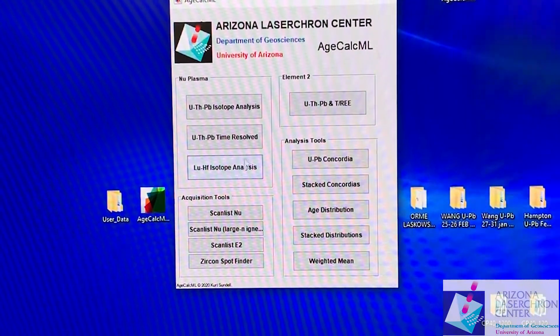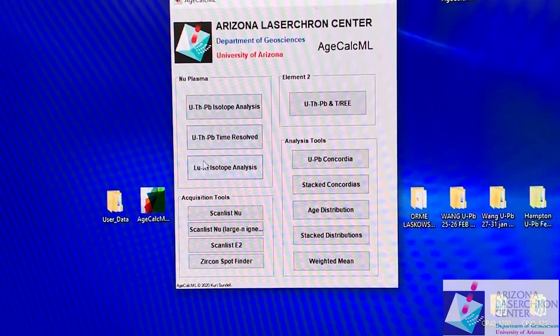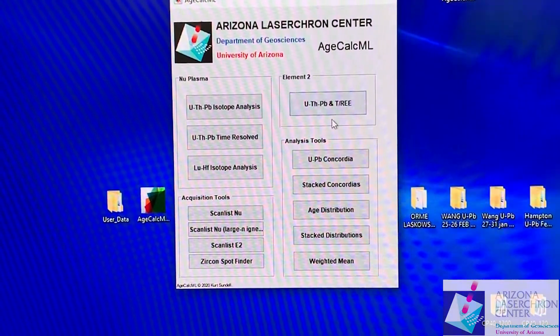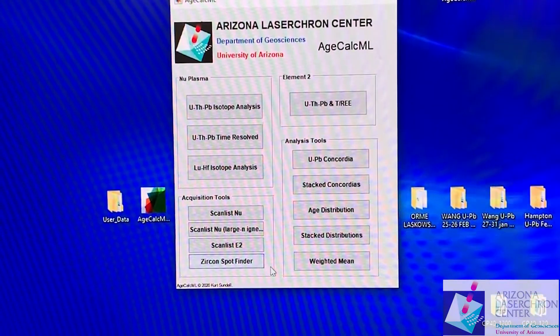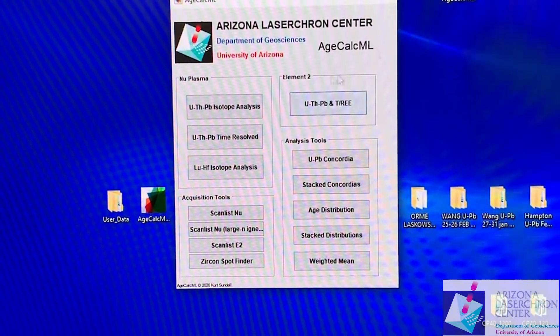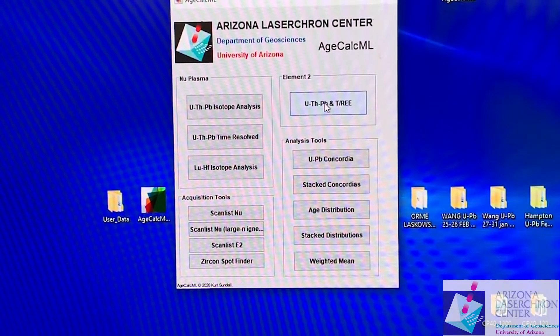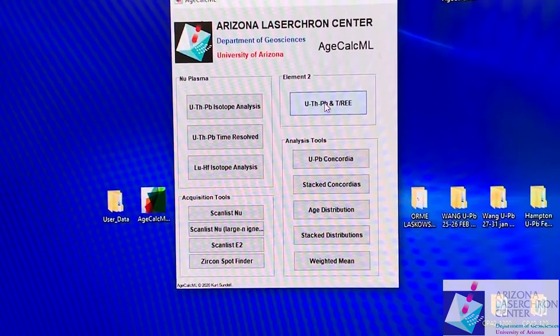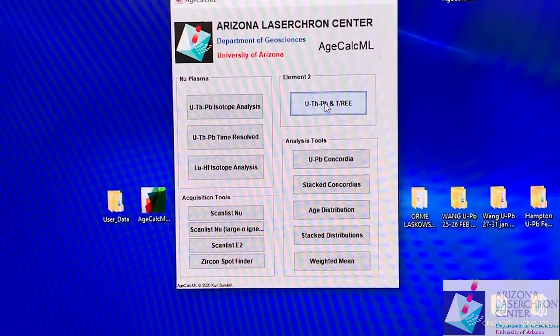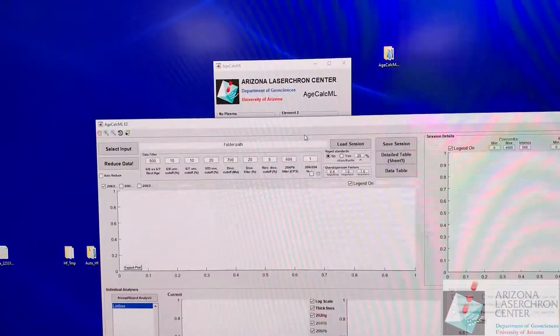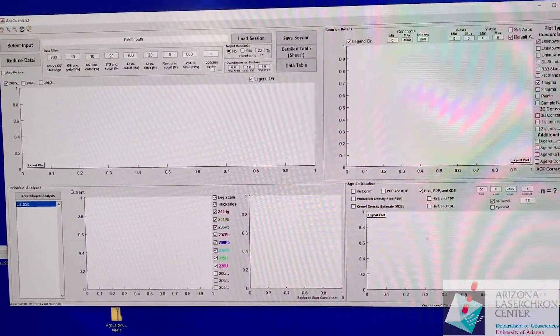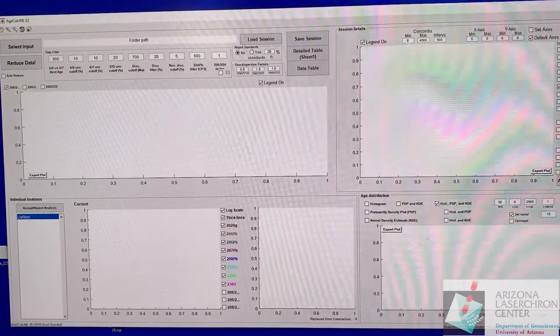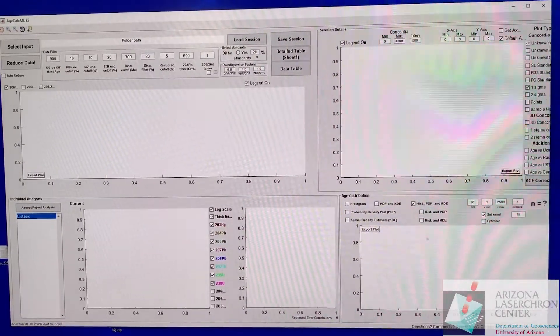Here's AgeCalcML. We have new plasma data reductions and Element 2 data reductions on the right. There's also a variety of analysis tools and acquisition tools that all will have separate videos. For this video we just need this uranium lead data reduction for Element 2.